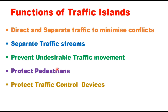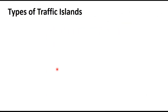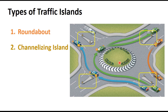Traffic islands generally serve more than one function but may be classified into six separate groups. The first is a roundabout — a central island which may be circular, elliptical, or any other shape located at the center of the intersection for channelization of traffic. Second is channelizing islands, which are used to separate, control, or direct the movement of traffic streams and to reduce area, angle of conflict, and speed.